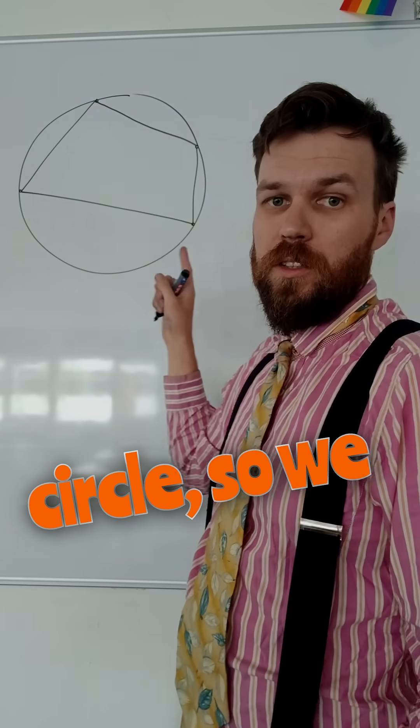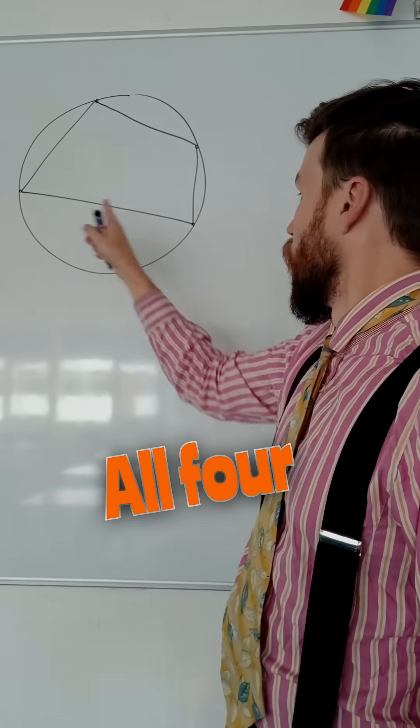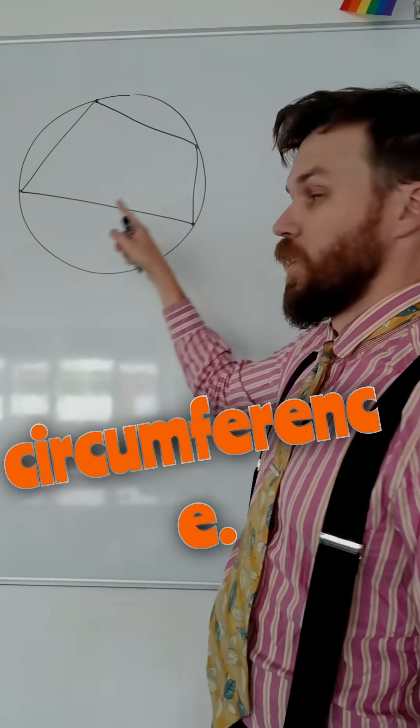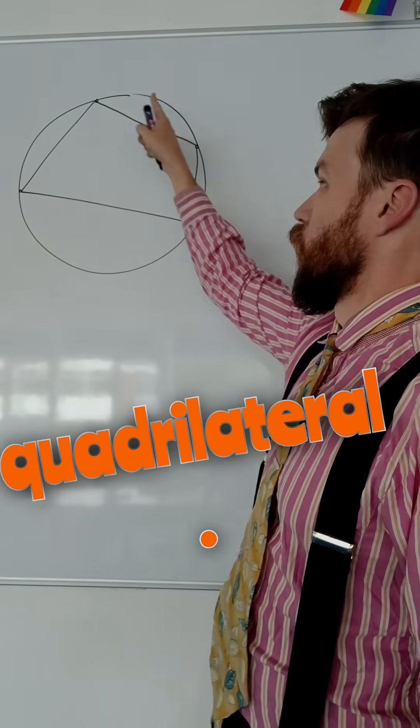It is inside a circle, so we call this a cyclic quadrilateral. All four vertices must be touching the circumference. The pointy bit better touch the edge for it to be a cyclic quadrilateral.